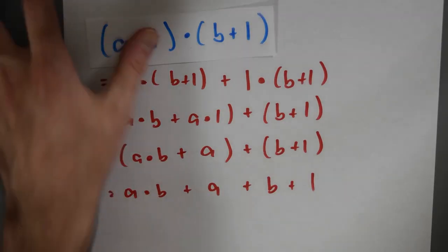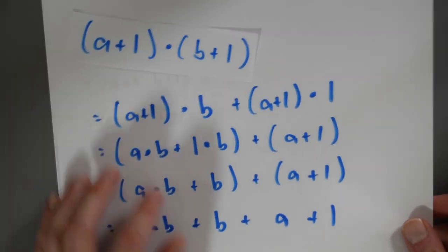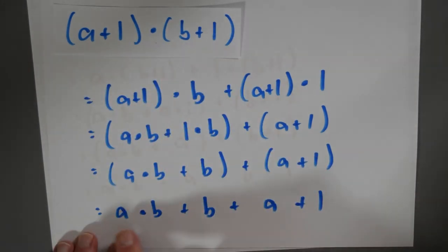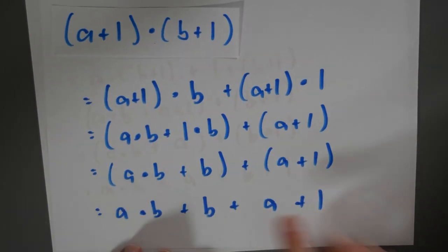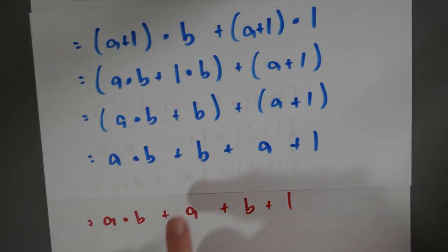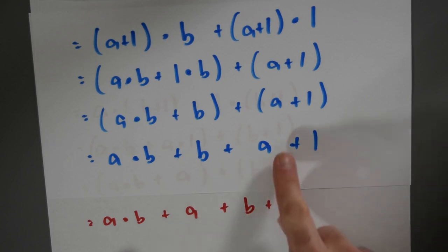What we've computed is not exactly the same. So the first time around when we did this, we got (a+1)·(b+1) = a·b + b + a + 1. But the second time, we got something that's equal but not exactly the same expression: a·b + a + b + 1.